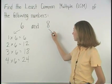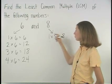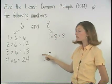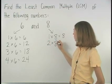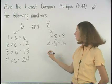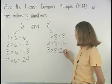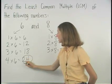So the multiples of 8 are 1 times 8, or 8, which isn't a multiple of 6, 2 times 8, or 16, which isn't a multiple of 6, 3 times 8, or 24, which is a multiple of 6.